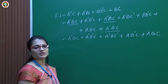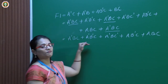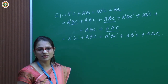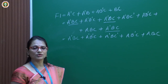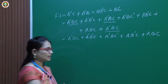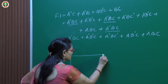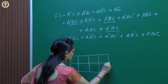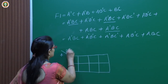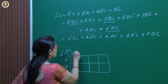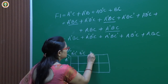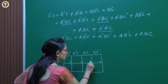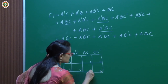So when a Boolean expression is given in non-canonical form, we first convert it to canonical form, then represent it using the K-map, and then simplify by grouping. For a three-variable K-map we need a minimum of 8 squares. We have already seen how to draw a K-map for three variables.